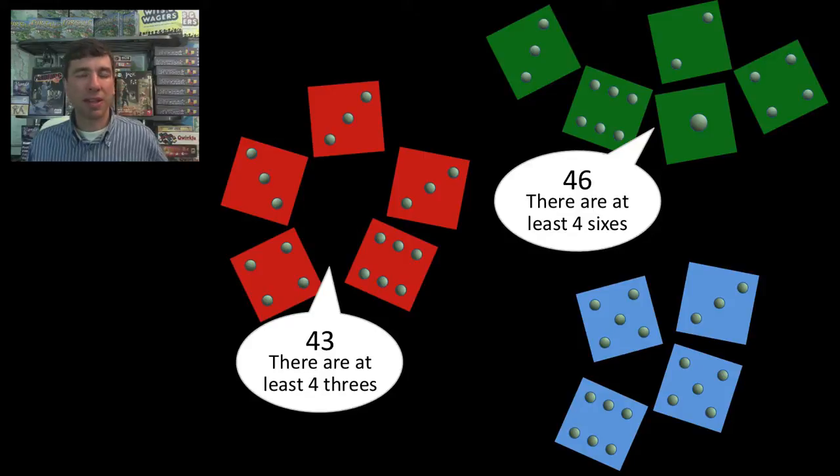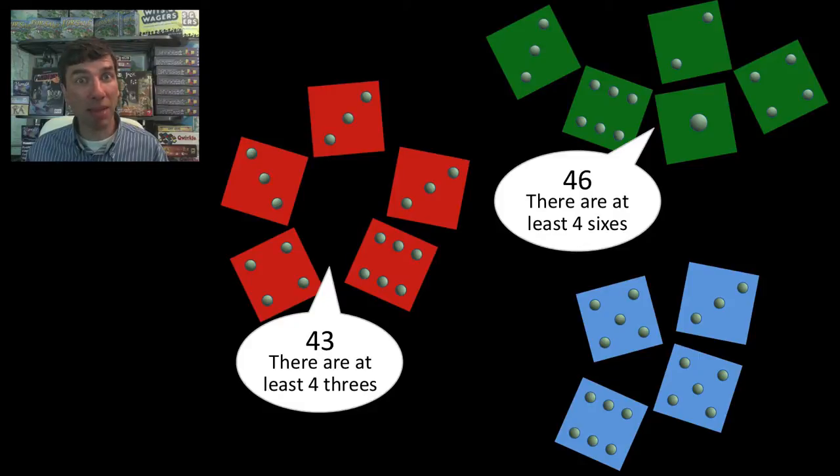Now, the blue group is going, hmm, I don't really want to call bluff on four sixes because I have one of them. So the blue group gets smart. And they think, well, the red group started with a bid of 43. So I'm going to up that to 53. There are at least five threes.